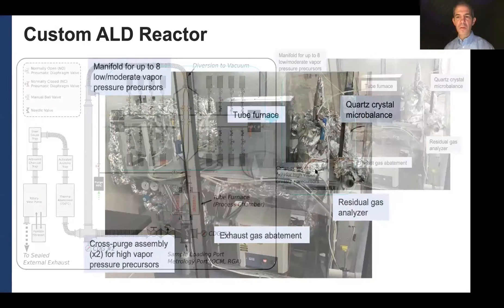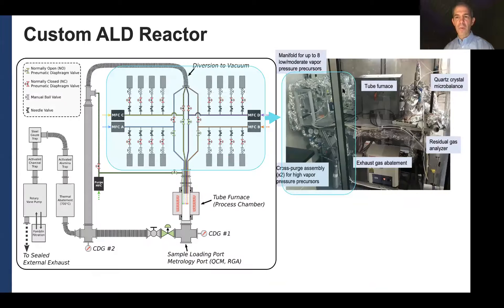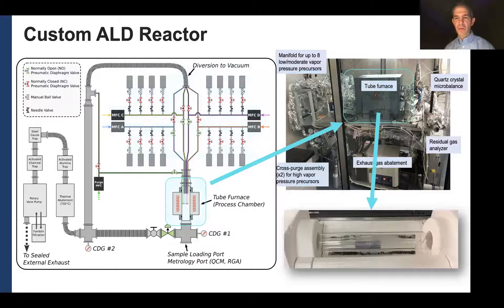So we've got our precursor bay here. So sort of high vapor pressure precursors up here that are liquids or maybe lower vapor pressure that we need to heat. And then some gases down here that are on these cross purge systems, higher pressure gases like hydrogen sulfide. This is our tube furnace, right? Where we load our samples. That's a brand new tube so we can actually see through it. This thing gets coated and it becomes opaque.